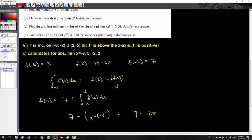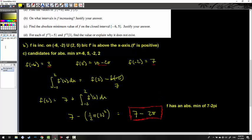Which one is the smallest? Is it 3? Is it 10 minus 2π? Is it 7? Or is it 7 minus 2π? It's this guy. Because 2π is about 6 something or other. So 7 minus that is going to be less than 1. So all you have to say now is f has an absolute min of 7 minus 2π when x equals 2. That's b and c. We're almost there. Let me clean up the board and we will get to d.